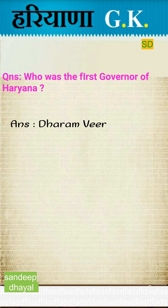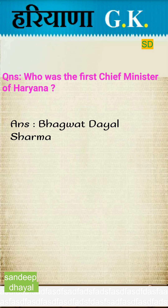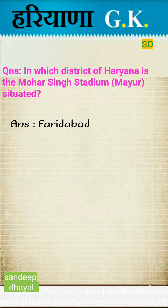Who was the first Governor of Haryana? Who was the first Chief Minister of Haryana? Answer: Pandit Bhagwat Dayal Sharma. In which district of Haryana is the Mohar Singh Stadium situated? Answer: Faridabad district.